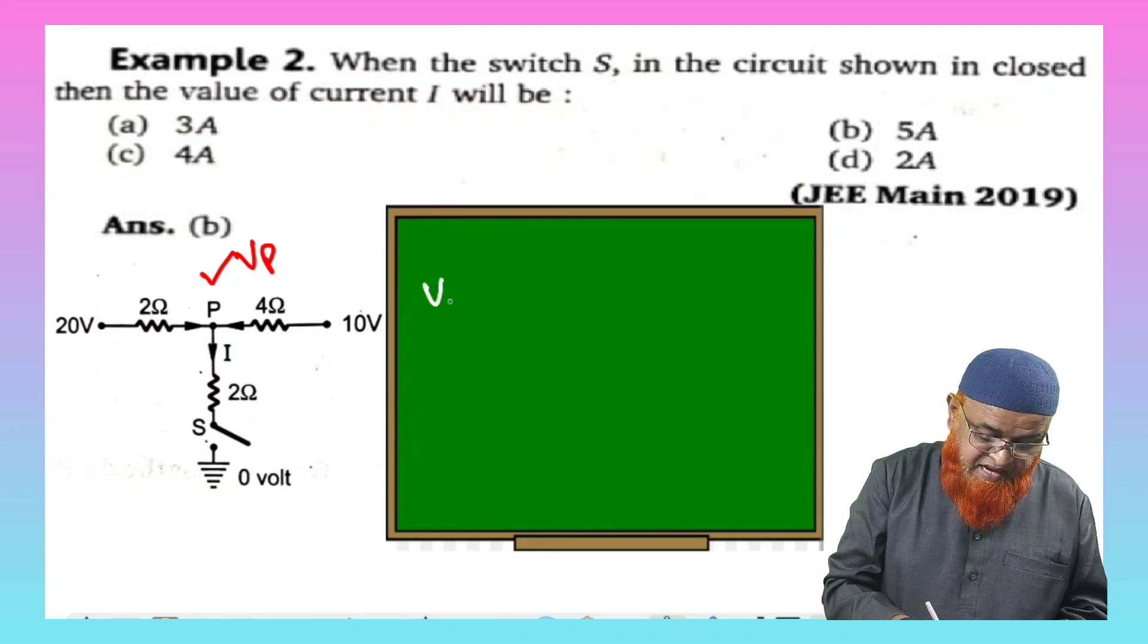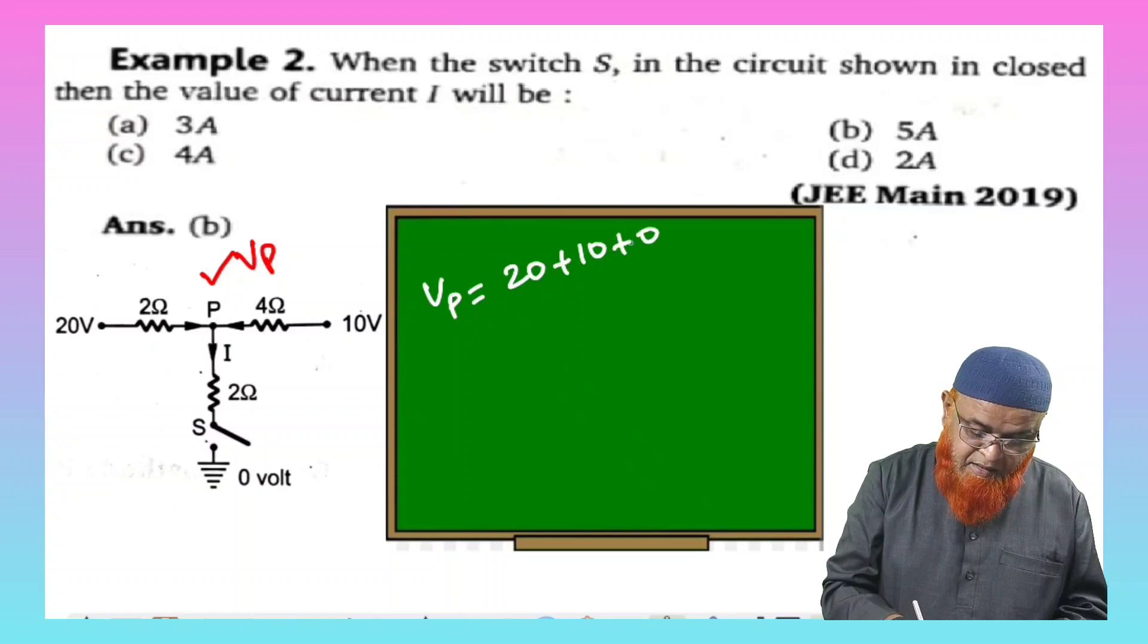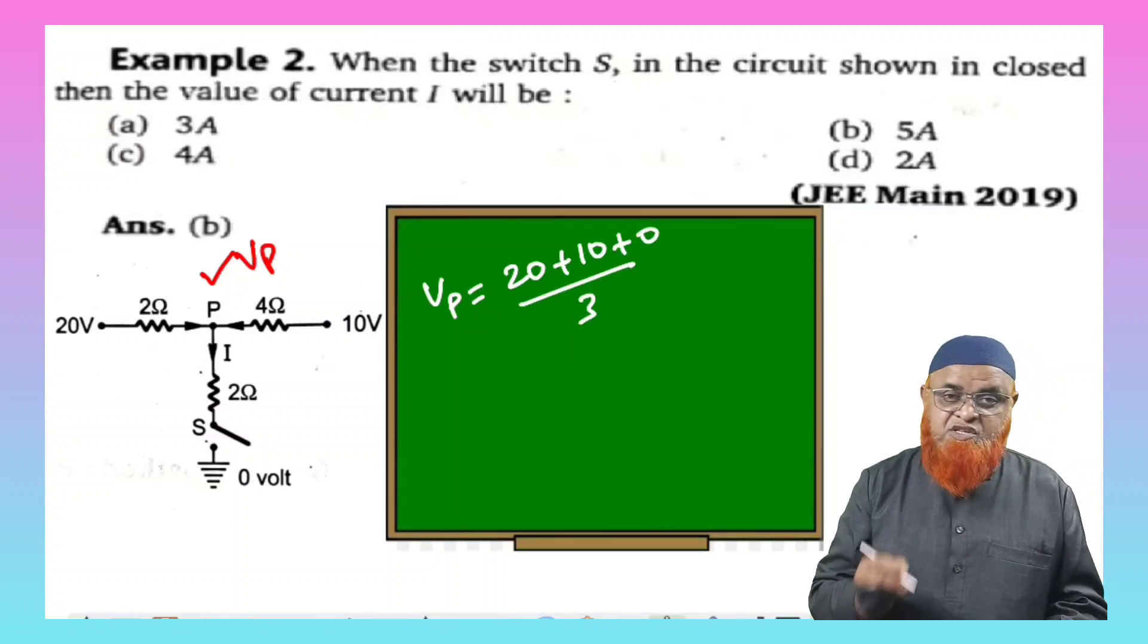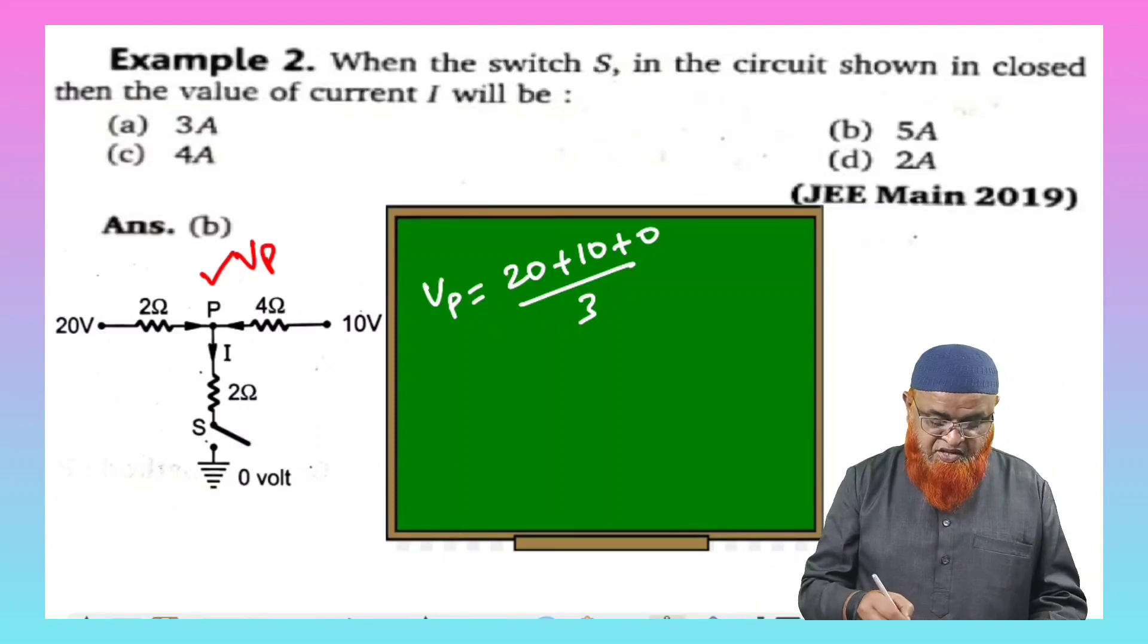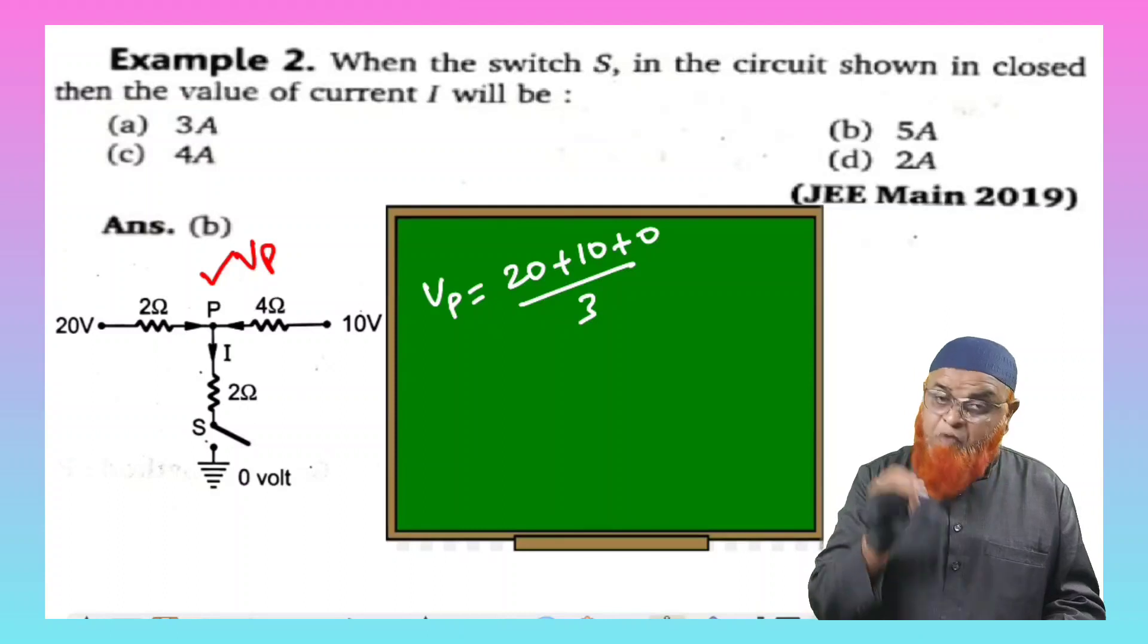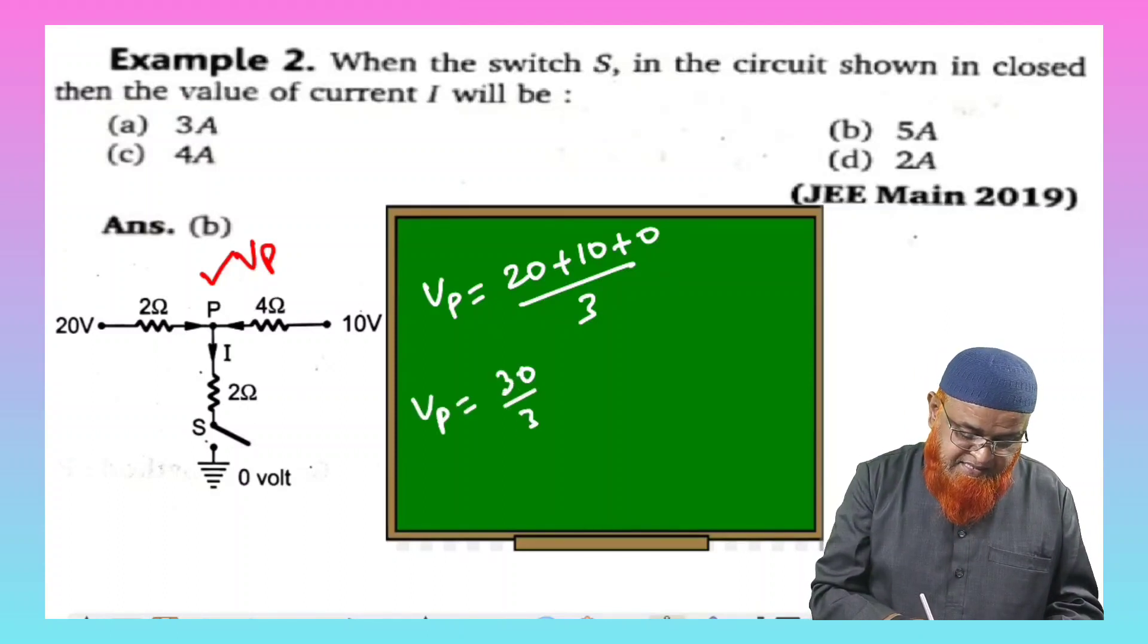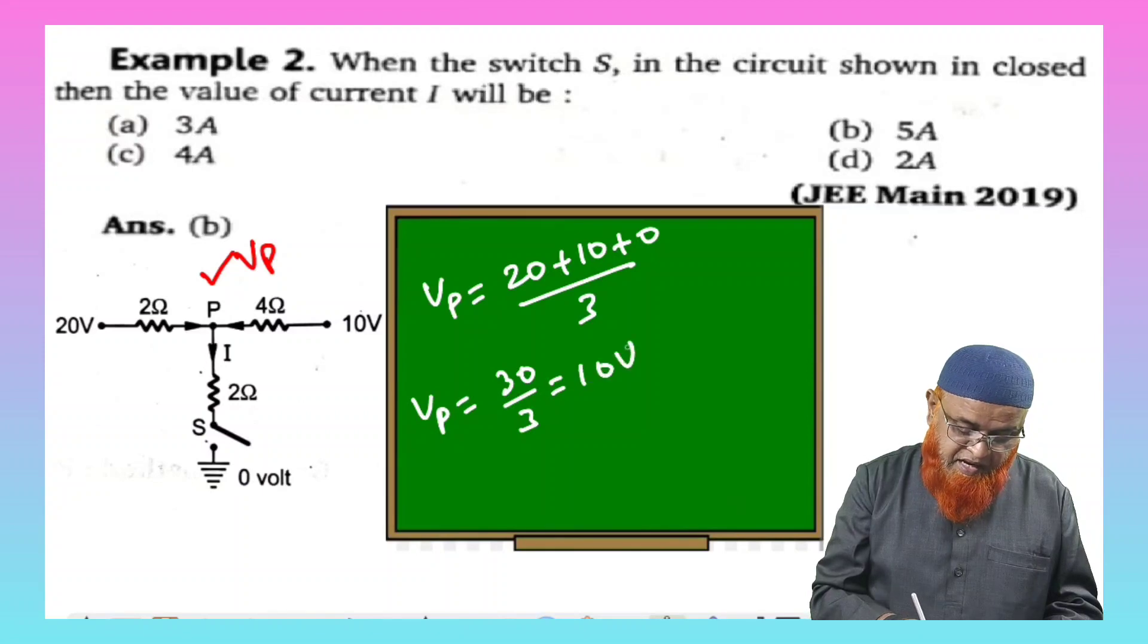You can just write here VP is equal to 20 plus 10 plus 0, divided by 3, because here he has given 0 as the voltage in all three places. You have to find out the average of all three voltages. That means you will get VP as 30 by 3, which is going to be 10 volts.